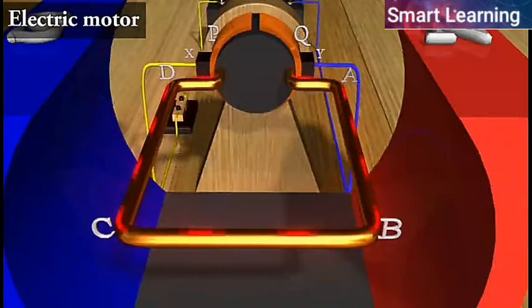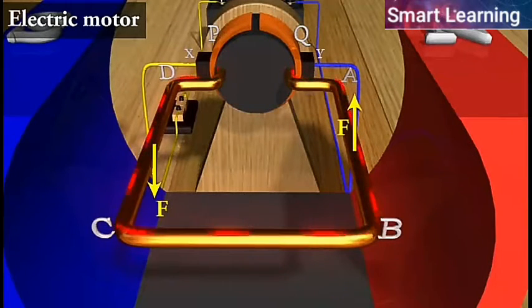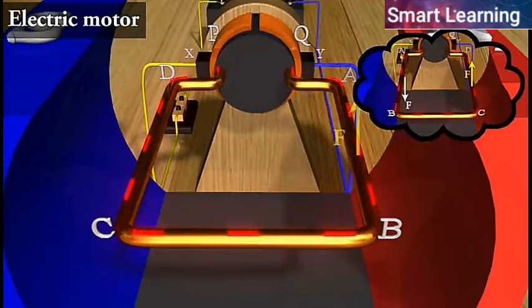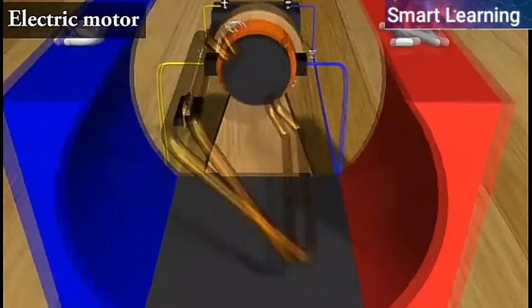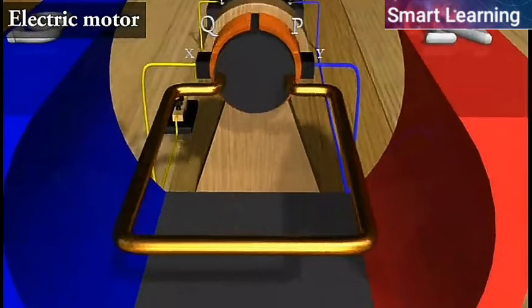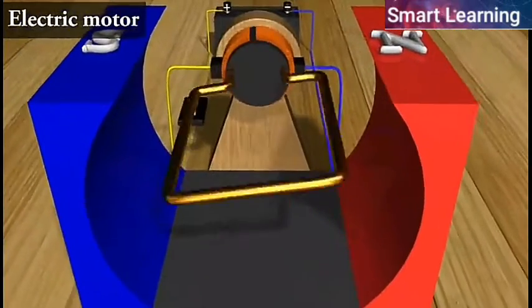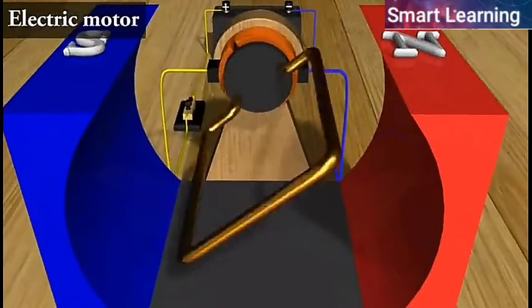The reversal of current also reverses the direction of force acting on the two arms AB and CD. Thus, the arm AB of the coil that was earlier pushed down is now pushed up and the arm CD, previously pushed up, is now pushed down. Therefore, the coil and the axle rotate half a turn more in the same direction. The reversing of the current is repeated at each half rotation, giving rise to a continuous rotation of the coil and the axle.